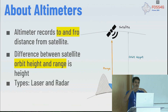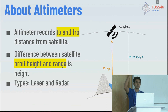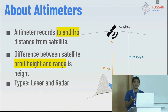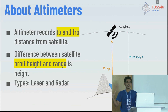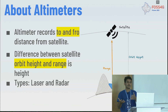An altimeter works via a satellite which passes overhead and emits radar pulses, measuring the distance it takes for the signal to return. This gives you the surface level and topography, which helps identify water levels — and even if there is no water, you can identify that as well.